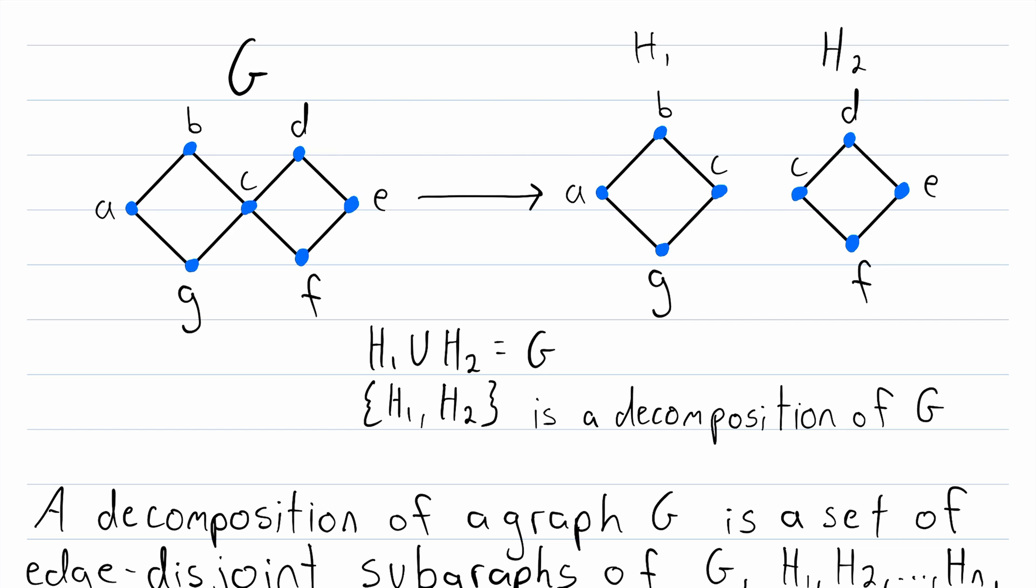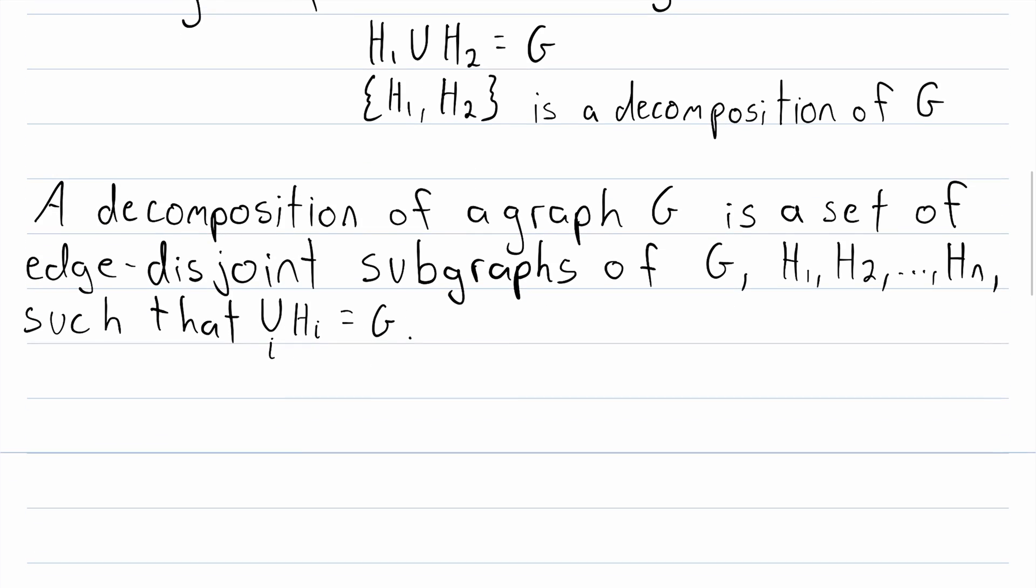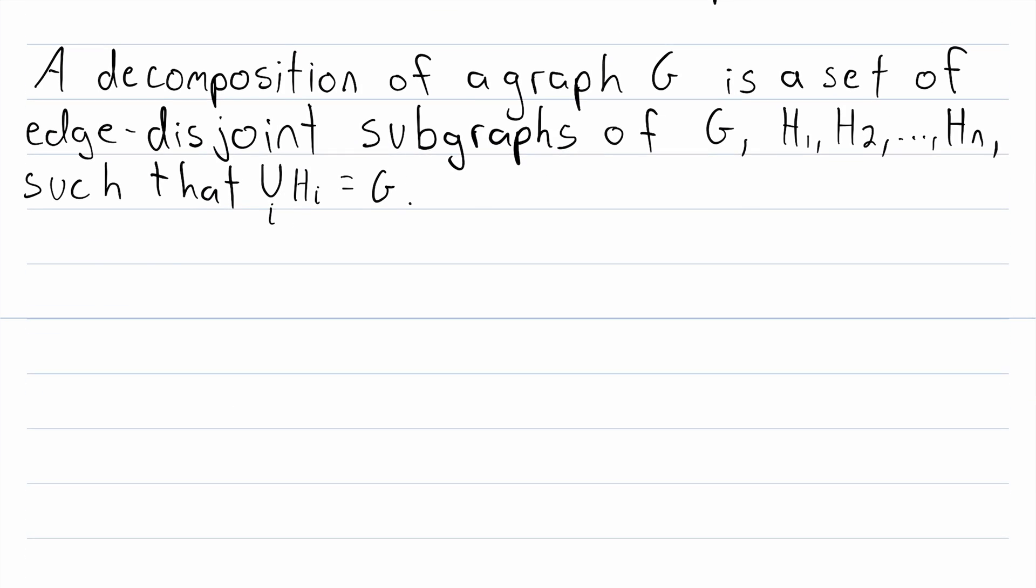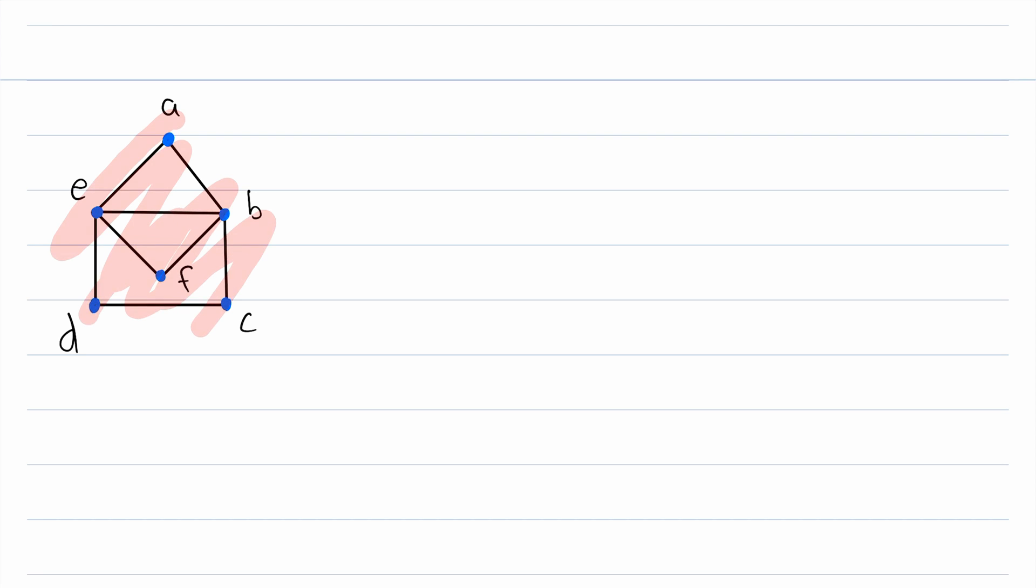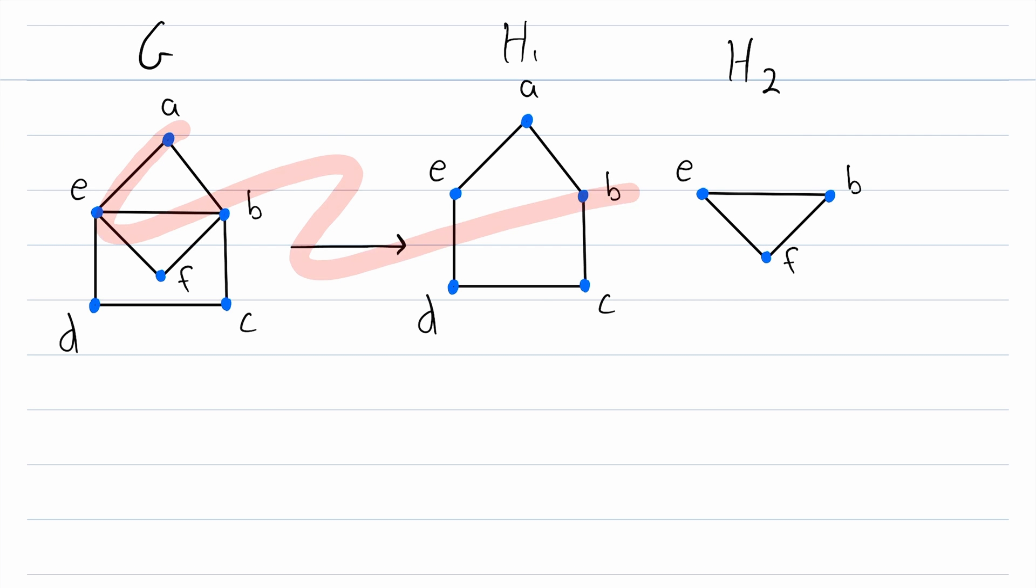All right, now hopefully the definition of graph decomposition is clear. Let's quickly check out another example. So here we've got another graph, and since our previous graph is now out of sight and out of mind, let's just call this graph G as well. So here we have one possible decomposition of the graph G. We've decomposed it into this subgraph H1 and this subgraph H2.